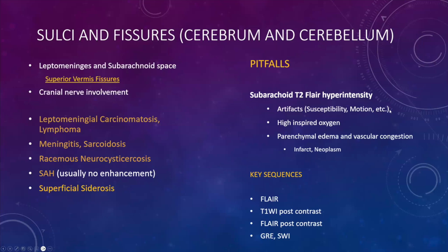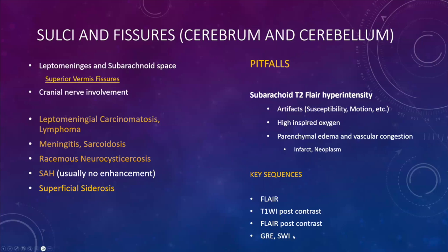The pitfalls include artifacts, especially on FLAIR with motion. High-inspired oxygen is a problem that can cause hyperintensity on FLAIR in the sulci. Vascular congestion can also cause false abnormal appearance of subarachnoid spaces. The key sequences are FLAIR and T1 post-contrast. Some institutions use FLAIR post-contrast, which is very sensitive for leptomeningeal disease. Gradient sequences are also helpful.